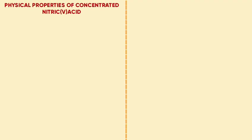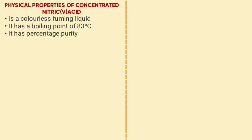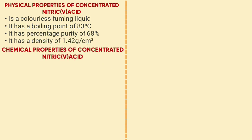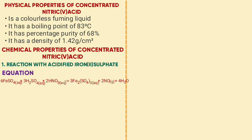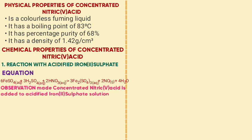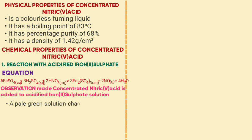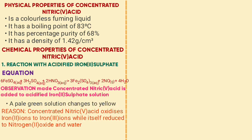The physical properties of concentrated nitric acid include: it is a colorless fuming liquid, it has a boiling point of 83 degrees Celsius, a percentage purity of 68%, and a density of 1.42 g/cm³. Chemical property number one is its reaction with acidified iron(II) sulfate. The equation is: 6FeSO4 + 3H2SO4 + 2HNO3 → 3Fe2(SO4)3 + 2NO + 4H2O. The observation is that a pale green solution changes to yellow, because concentrated nitric acid oxidizes iron(II) ions to iron(III) ions while being reduced to nitrogen monoxide and water.